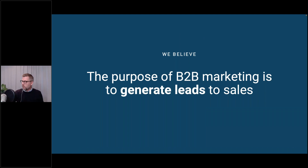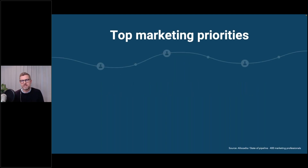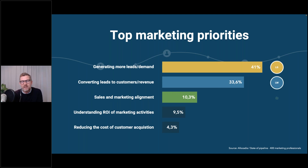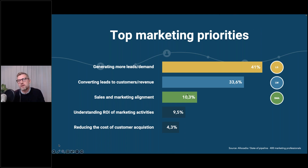We still believe, unwaveringly, that the purpose of marketing is to generate leads for sales — grow the business by keeping customers around for longer, making them buy more, and bringing in new customers. When big surveys ask marketing and sales heads about their top priorities, the first is generating more leads, the second is converting those leads to customers and revenue, and the third is aligning the sales and marketing teams. We've taken these three priorities — lead gen, lead management, and sales and marketing alignment — close to heart and built product for exactly that.